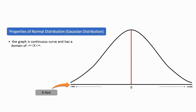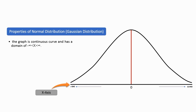Let's take the properties of normal distribution. As you can see on the graph, we have the x-axis and the center is called zero or the mean. The value on the left of zero will extend to negative infinity and the value to the right of zero will extend to positive infinity.